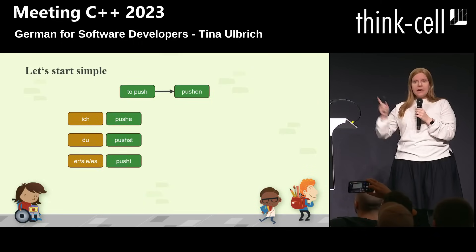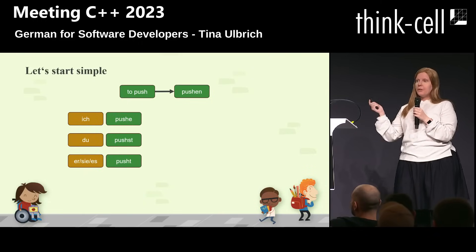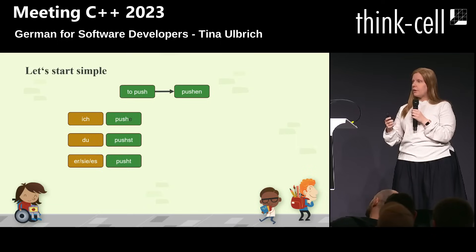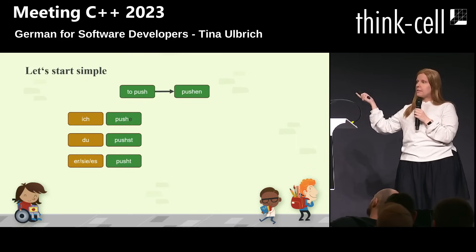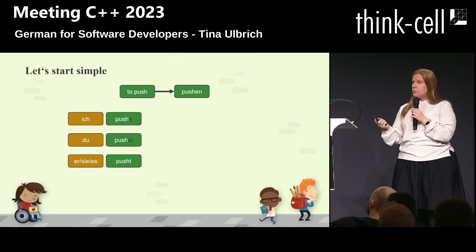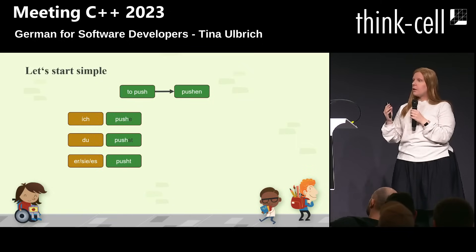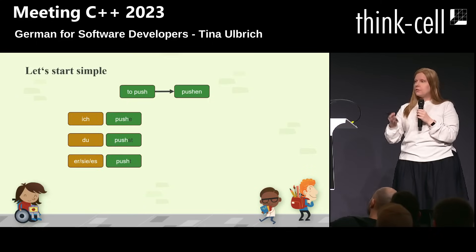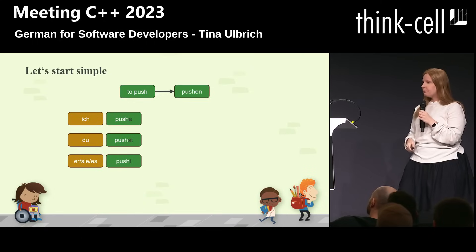So, there's actually a pattern in there. For the "ich" version, we add an "e" at the end of the basic English word. For "du," which is like the informal "you" that we use in German, we add a "st." And for "er/sie/es," which is he, she, it, we add a "t" at the end of the basic English word.